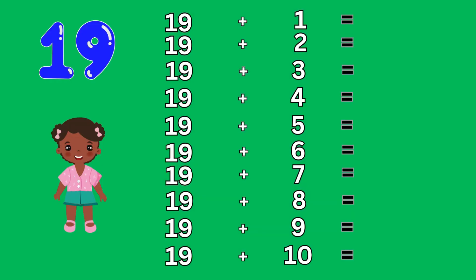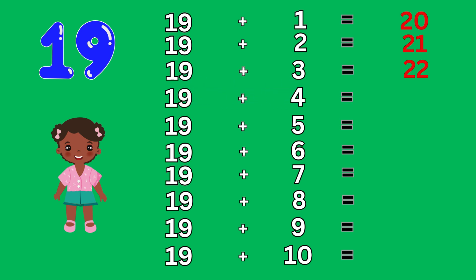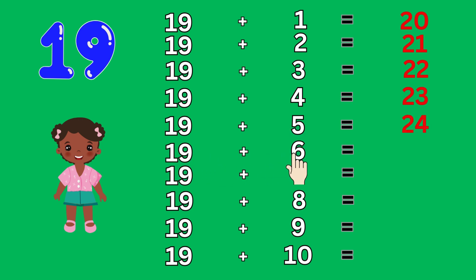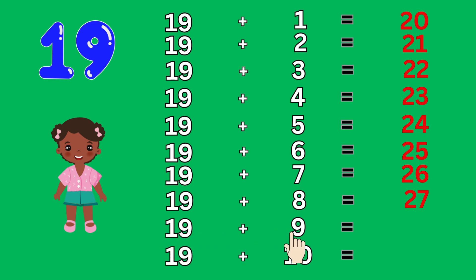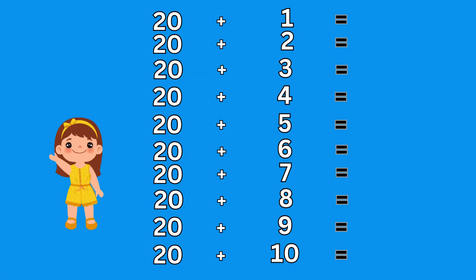Addition table 19. 19 plus 1 equal to 20. 19 plus 2 equal to 21. 19 plus 3 equal to 22. 19 plus 4 equal to 23. 19 plus 5 equal to 24. 19 plus 6 equal to 25. 19 plus 7 equal to 26. 19 plus 8 equal to 27. 19 plus 9 equal to 28. 19 plus 10 equal to 29.